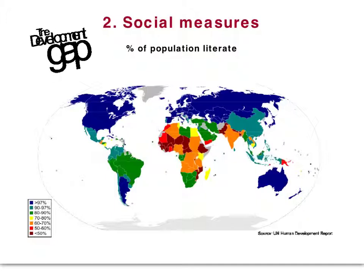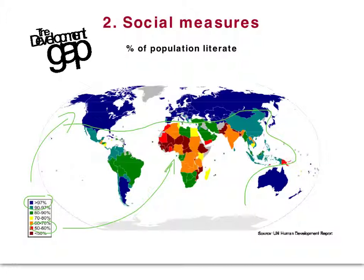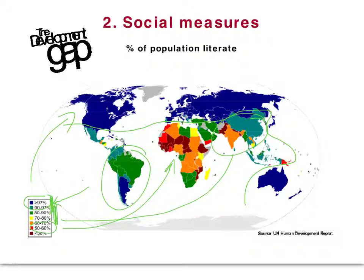The final social measure is literacy rates. With blues as the highest values, MEDCs make up most of that top tier. Africa has oranges and reds, putting it in the lower range. South America shows blues and greens up towards the top. Asia comes in with a slightly bigger spread. So the order is: South America number one, Asia number two, and Africa — especially Sub-Saharan Africa — number three in terms of the population that can read and write.